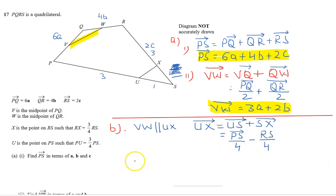So this is equal to PS, which is 6A plus 4B plus 2C, minus RS, which is 2C, divided by 4. The LCM is 4, so that is equal to 6A plus 2C divided by 4.